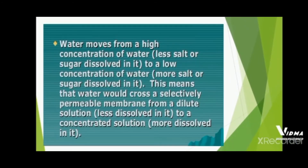In more detail: water moves from a higher concentration of water — less salt or sugar dissolved in it — to a lower concentration of water — more salt or sugar dissolved in it. This means water crosses a selectively permeable membrane from a dilute solution to a concentrated solution. It moves from where it is in high concentration to where it is needed in the low concentration area through the semi-permeable membrane.